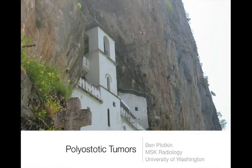In this lecture we're going to talk about polyostatic tumors, or multiple bone tumors that all look alike. We've talked in other lectures about how you come up with a reasonable differential diagnosis based on what a tumor looks like, its location, morphology, matrix, and any aggressive features it may have. Those factors are all going to help us in talking about polyostatic things as well.